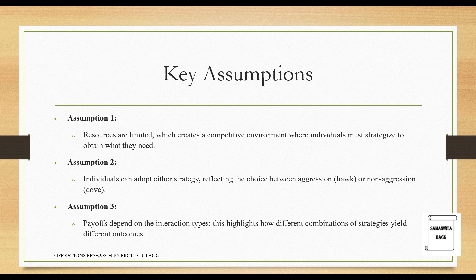Assumption 2: individuals can adopt either strategy, reflecting the choice between aggression — Hawk — or non-aggression — Dove. An individual can choose to be a Hawk or a Dove, and this applies not only to birds but also to humans and how they choose to react in a situation. Assumption 3: payoffs depend on the interaction types. If two individuals fight and get nothing, it is of no use. If they cooperate and get lesser resources, that is better. If one becomes a Hawk and the other a Dove, the aggressive one takes the entire payoff, leaving the other completely resourceless.